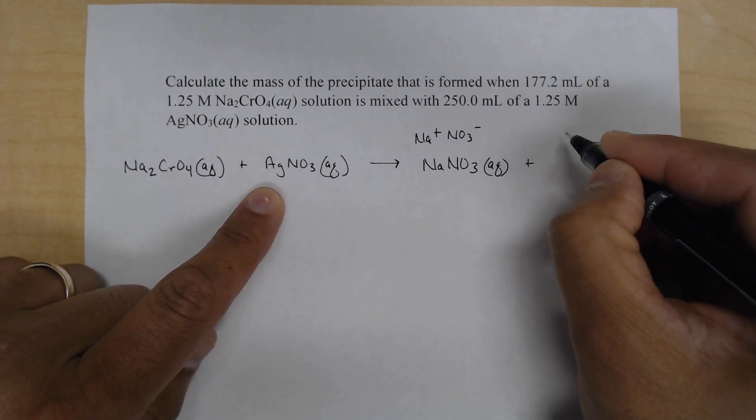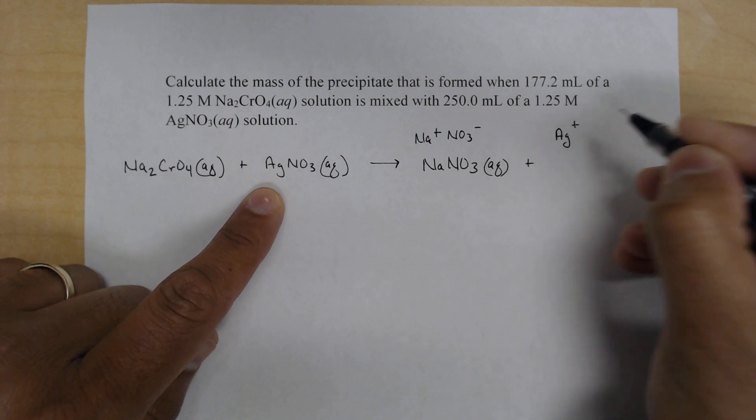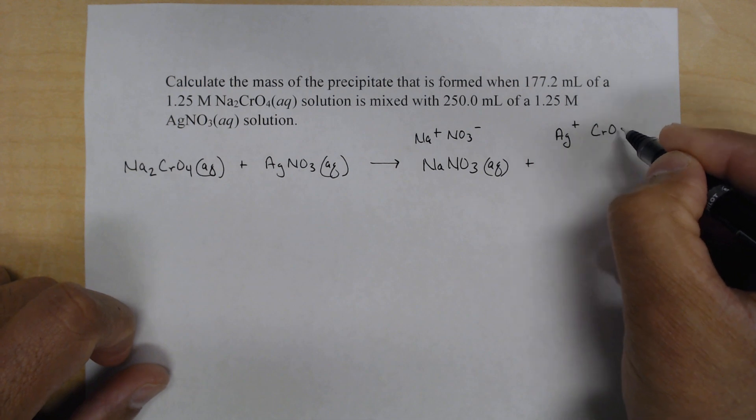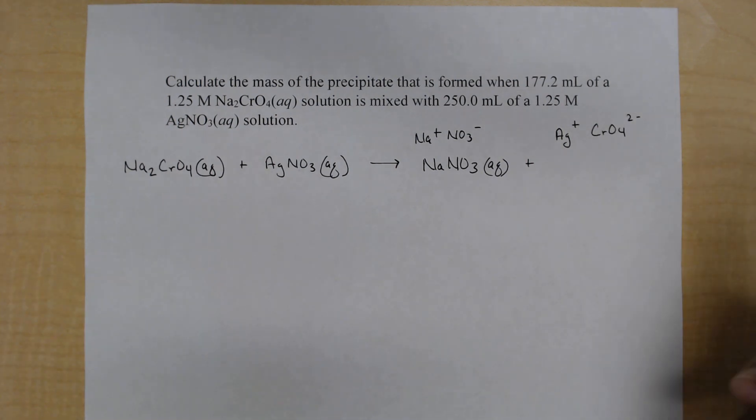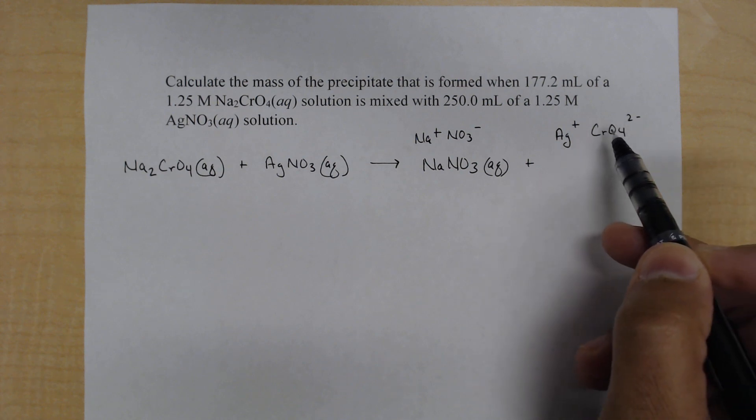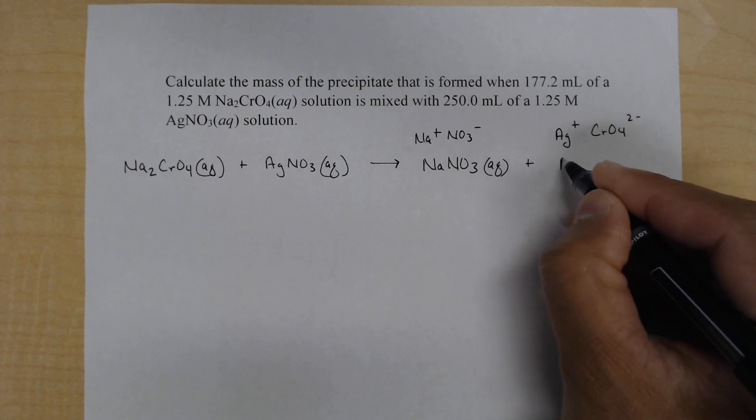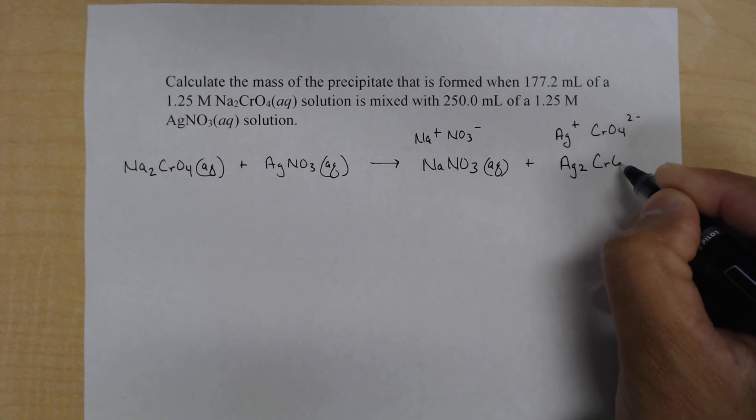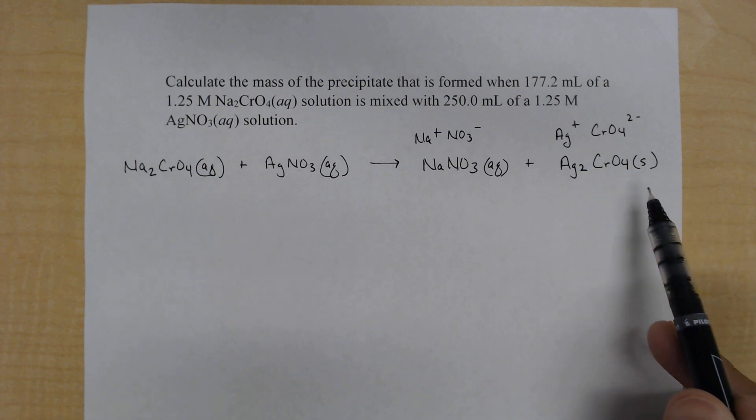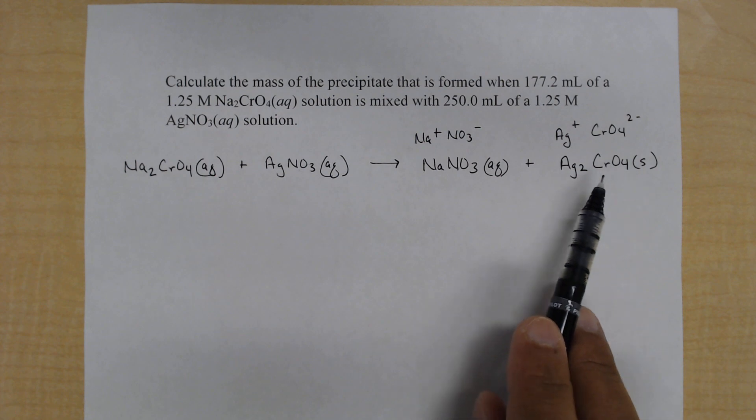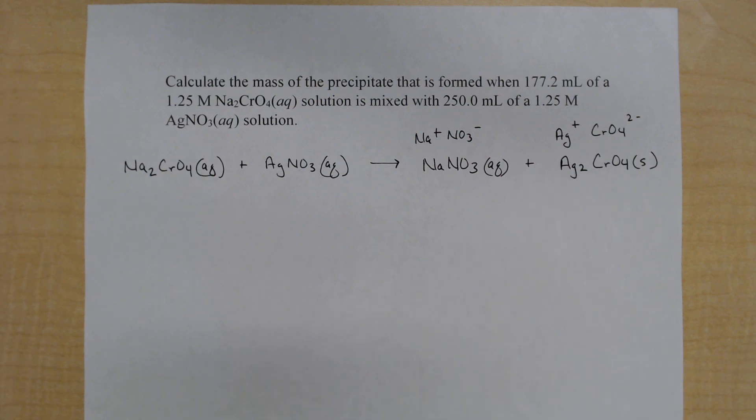Our next product we'll write silver ions but instead of the nitrate we'll write chromate. Now you'll notice something a little bit different here. The charges do not balance. So in order to write a formula we'll have to balance these charges. So for that we'll have two silver, Ag2, and one chromate. If you go to the solubility rules you'll find that chromate is insoluble so we'll write S for solid when chromate binds to silver.